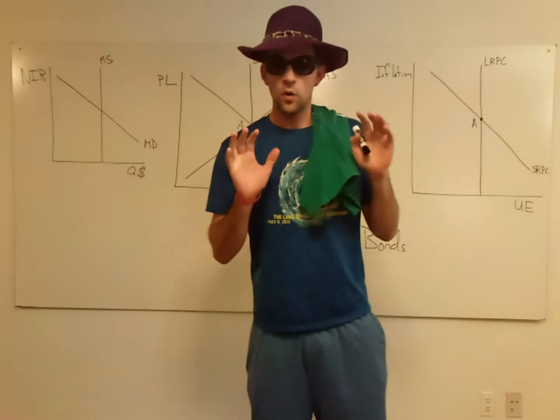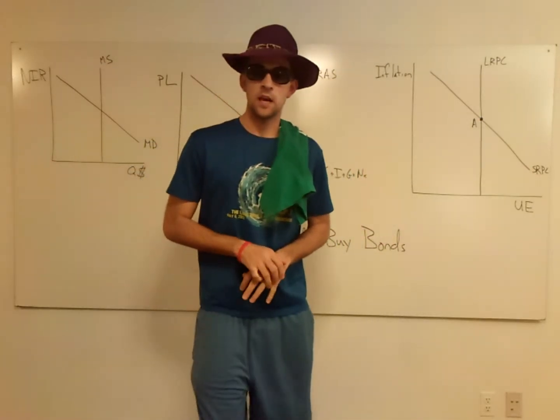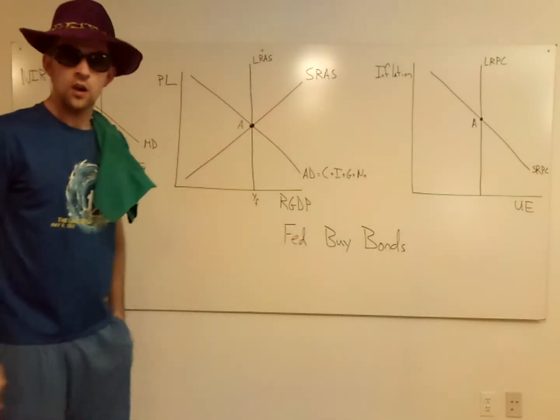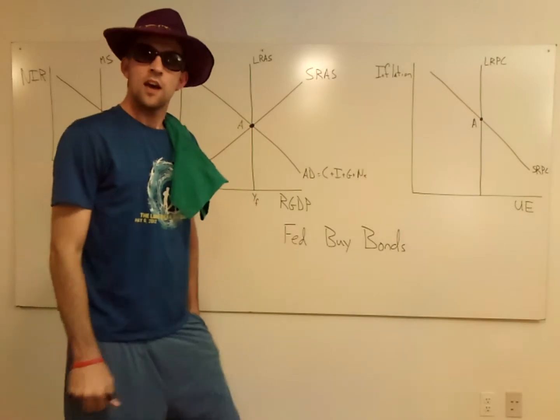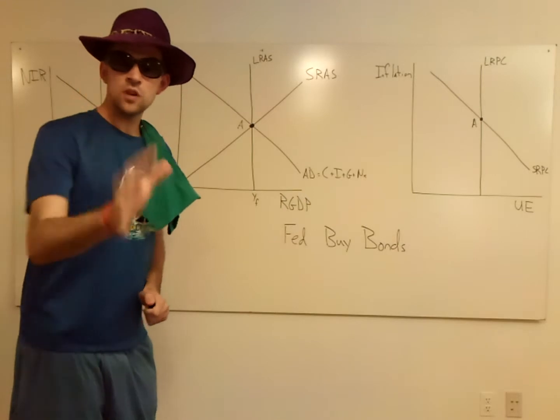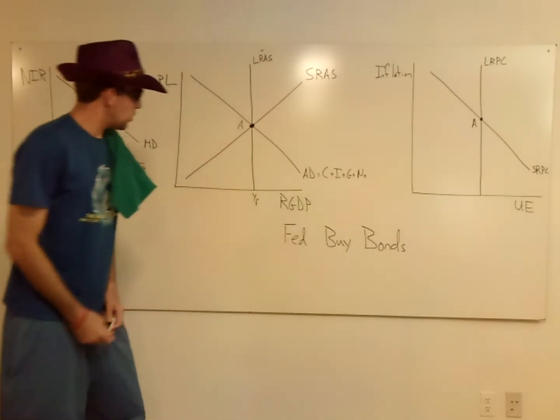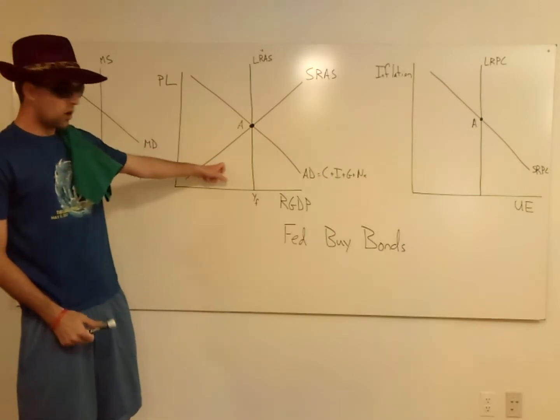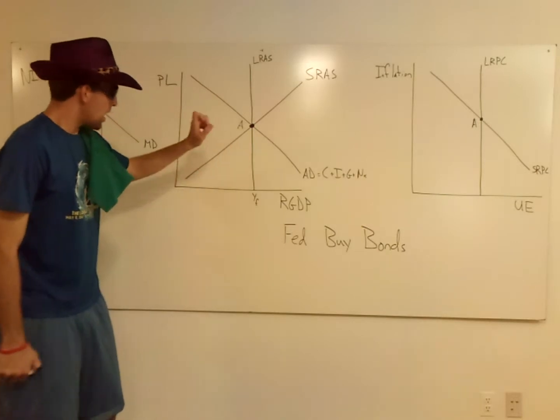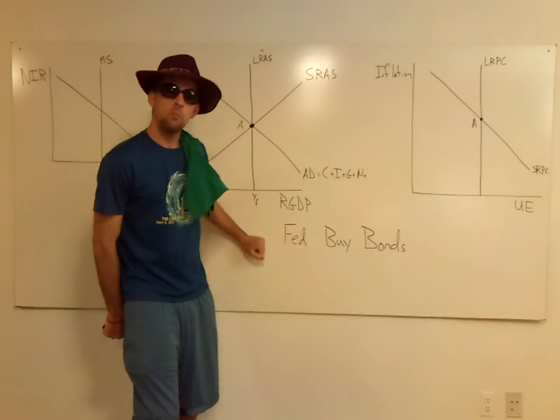So this is a big question, but it's a question that in some way, shape, or form is going to show up on the AP test. These three graphs will work together to illustrate some ideas here. I'm going to tell you this scenario, and then I'm going to ask you to do some things. With our economy in long-run equilibrium, the Fed is going to begin buying bonds.